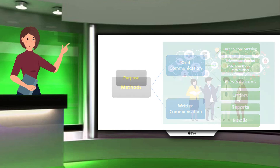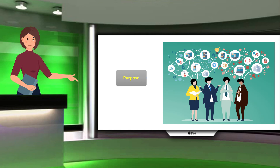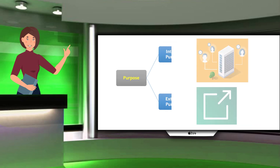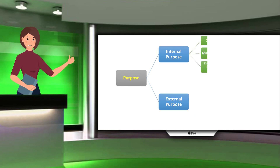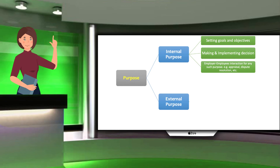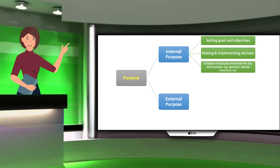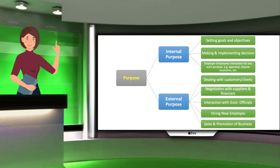Now, we will discuss the purpose of business communication. The purpose can be divided into two parts: internal purpose and external purpose. Internal purpose includes setting goals and objectives, making and implementing decisions, and employer-employee interaction for purposes such as appraisal or dispute resolution. External purpose includes dealing with customers, negotiation with suppliers and financers, interaction with government officers, hiring new employees, or sales and promotion of business.